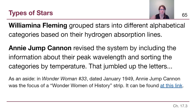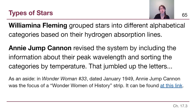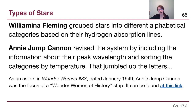Annie Jump Cannon followed up about ten years later and revised the system once more information about these stars was available. Wilhelmina Fleming had only been looking at the spectral lines without any information about temperature or peak wavelength, but Annie Jump Cannon went back to those same categories, added temperature information, and put them in order from the hottest type of star down to the coldest. So instead of alphabetical order, we have a kind of weird order based on Fleming's original alphabetical categories revised by temperature.